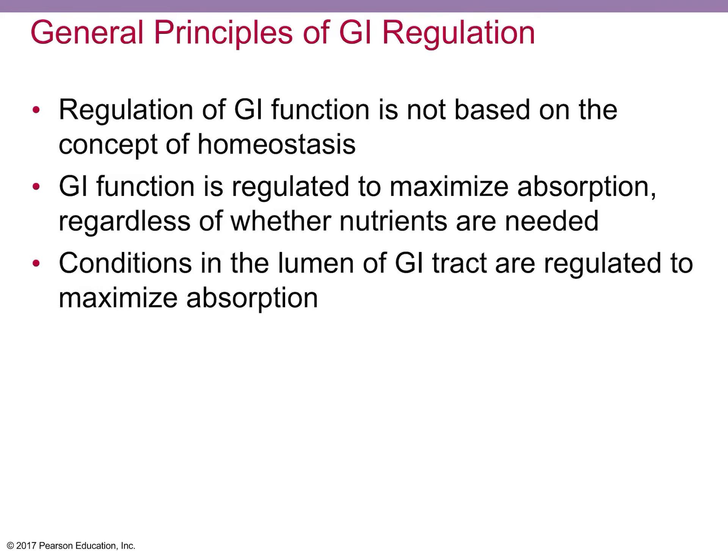GI function is regulated to maximum absorption, whether we need it or not, and conditions in the lumen of the GI tract are regulated to maximize absorption. We didn't get to where we are by not absorbing food in terms of our evolutionary past. In order to survive, because food was not readily accessible, we had to pack away and store all the calories we encountered. We still have that system, even though we now have plenty of food at our fingertips.